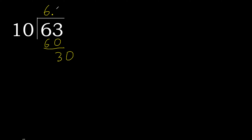Subtract: 63 minus 60 is 3. Next, that is not a whole number, therefore complete — always complete with 0. Here, with the decimal point, complete the point.